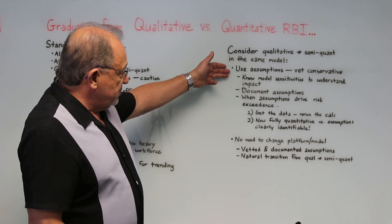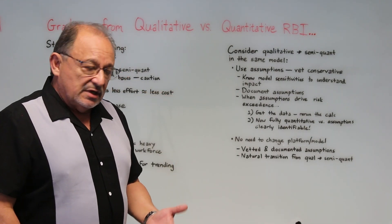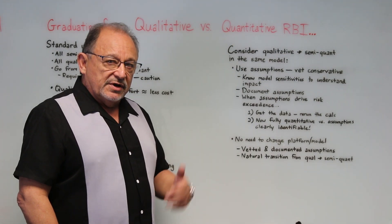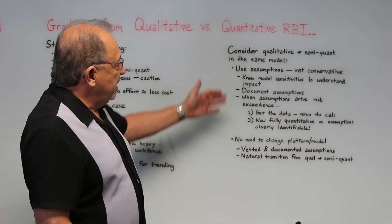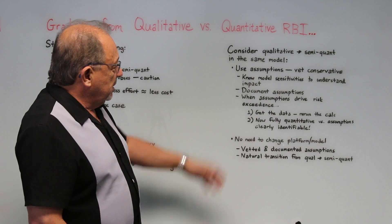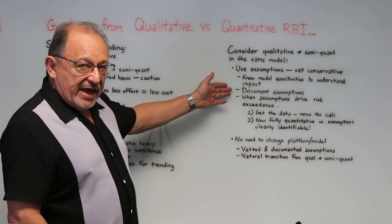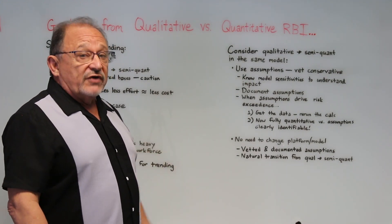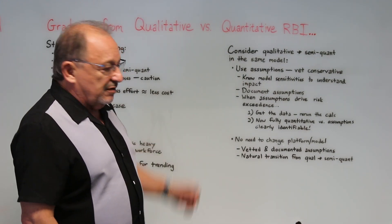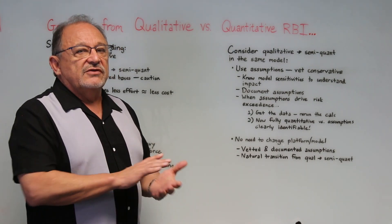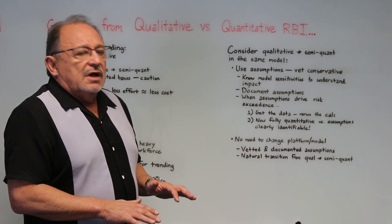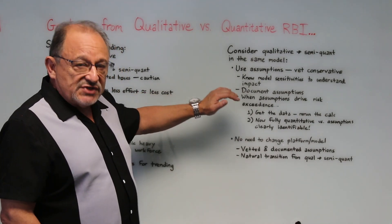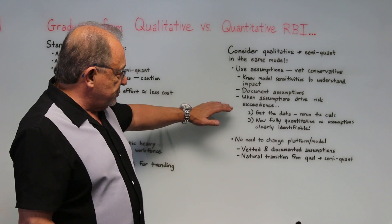We need to understand the model we're using because not all inputs are equal — some inputs will have a bigger impact on the output than others. Document your assumptions. A lot of times, meaning well, we overcomplicate things. I'm a big fan of guidelines — keep it somewhat higher level, then document any assumptions and document any deviations.